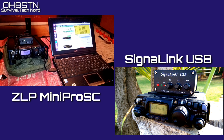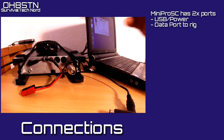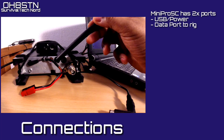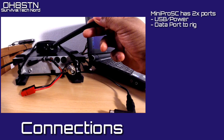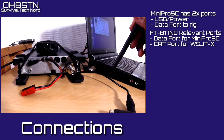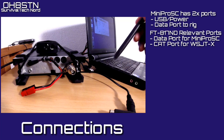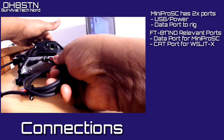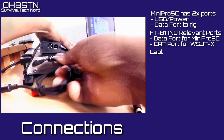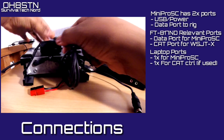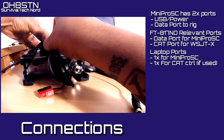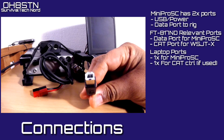From a WSJTX perspective, this video is relevant to both the ZLP Mini Pro SC and the Signal Link USB audio interfaces. The very first thing we're going to do is connect the ZLP Mini Pro SC to the Yaesu FT817 or other radio's data port. Then we'll connect the USB port from the Mini Pro SC to a spare USB port on your laptop.